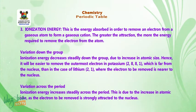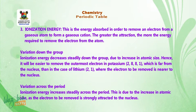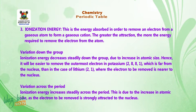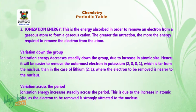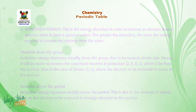Number 3 is ionization energy. This is the energy absorbed in order to remove an electron from a gaseous atom to form a gaseous cation. The greater the attraction, the more the energy required to remove the electron from the atom. Variation down the group: ionization energy decreases steadily down the group due to increase in atomic size. Hence, it would be easier to remove the outermost electron in potassium with electronic configuration 2-8-8-1, which is far from the nucleus, than in the case of lithium with electronic configuration 2-1, where the electron to be removed is nearer to the nucleus. Variation across the period: ionization energy increases steadily across the period, due to the increase in nuclear charge as the electron to be removed is strongly attracted to the nucleus.